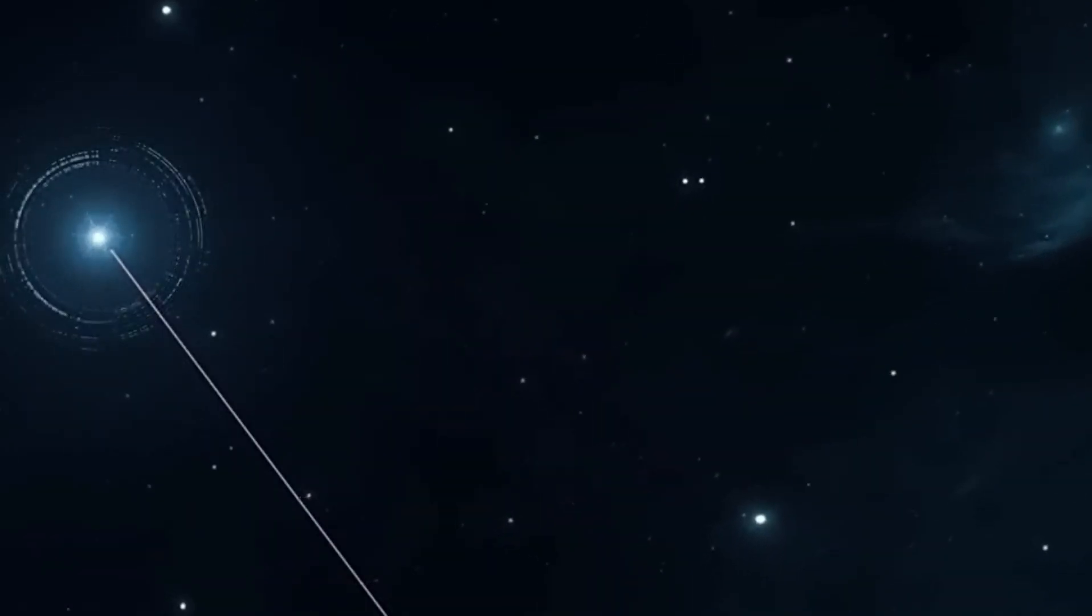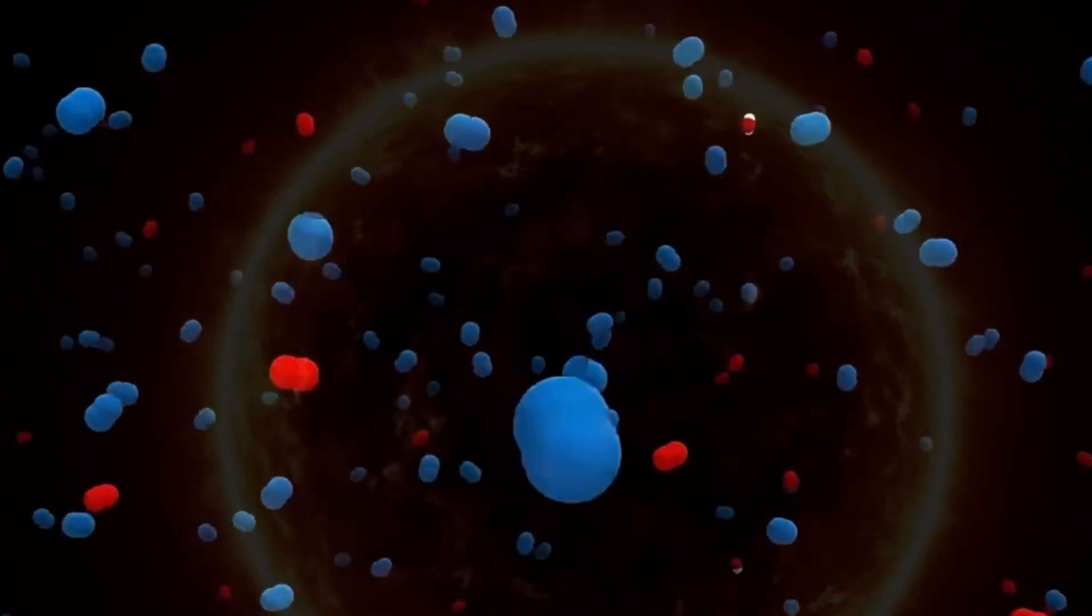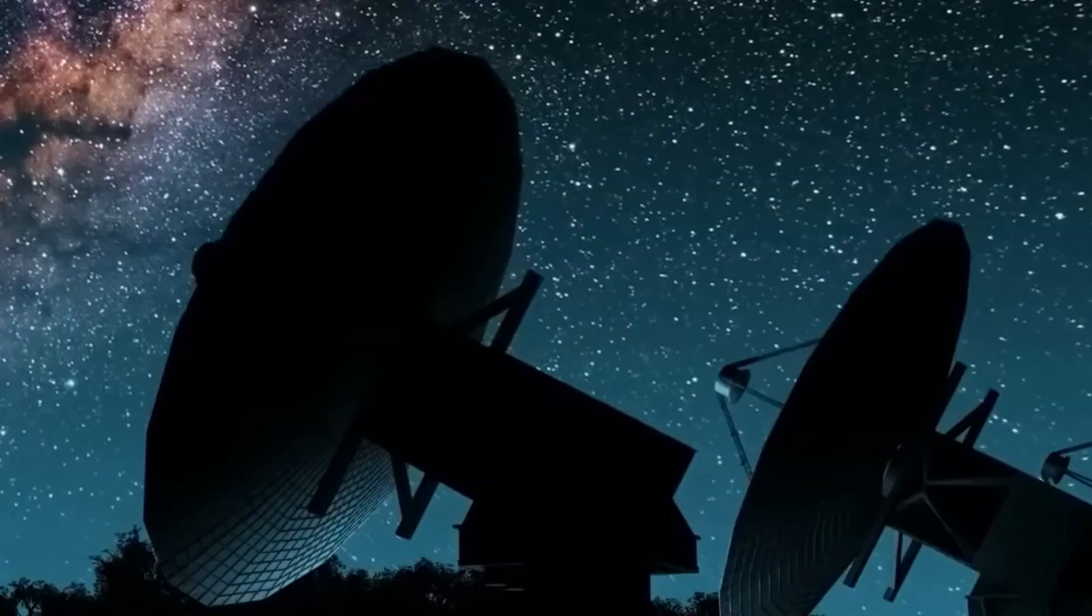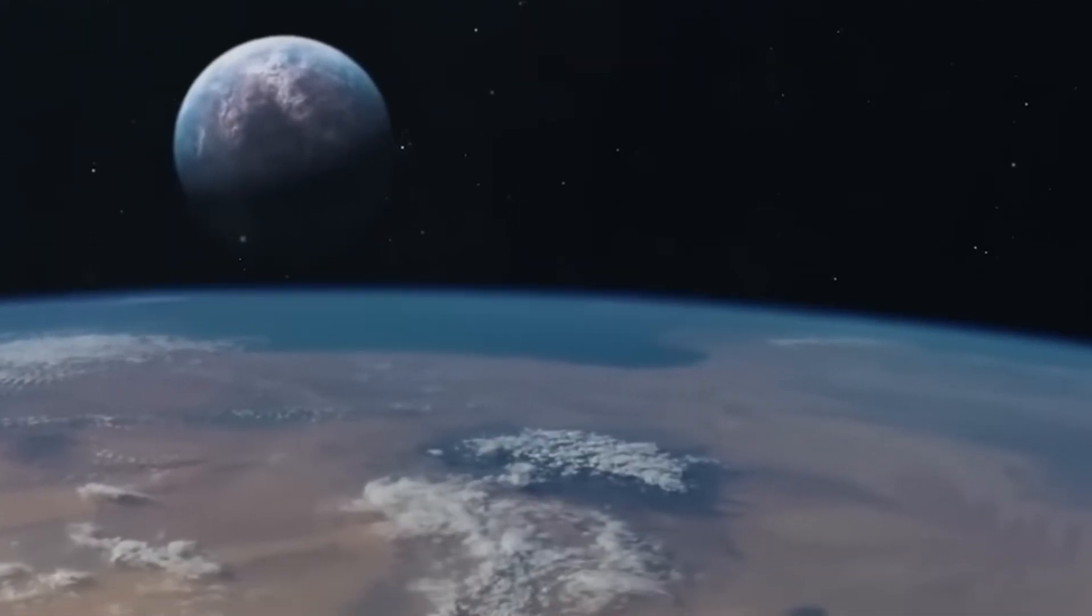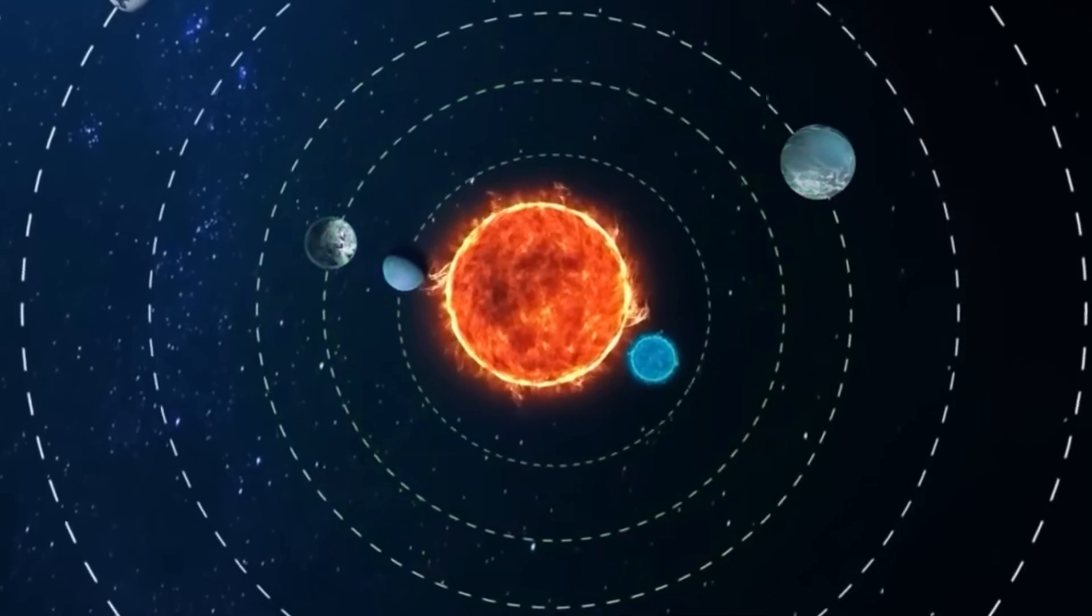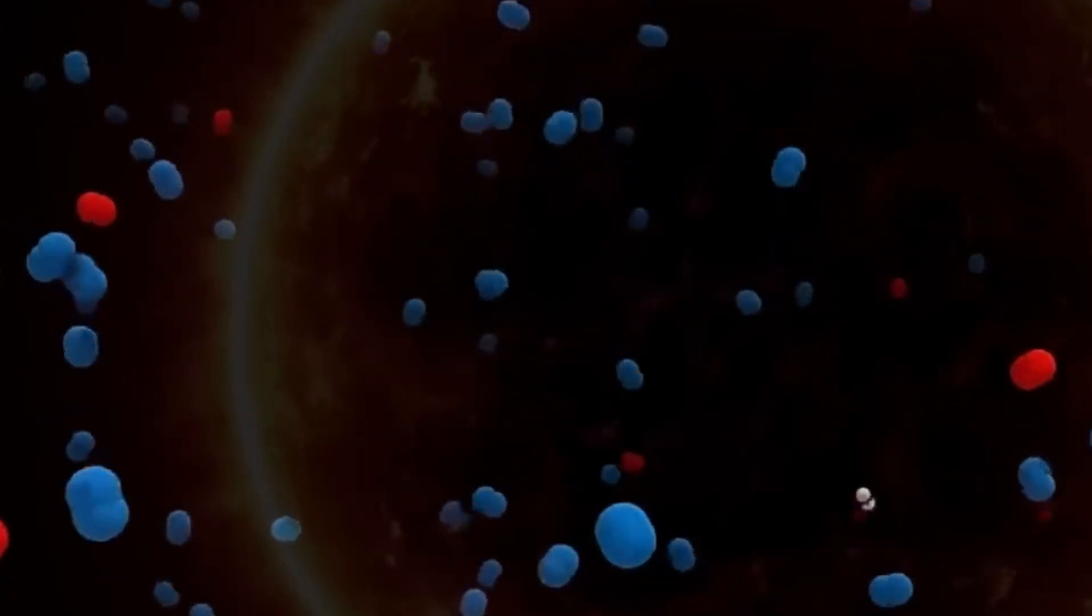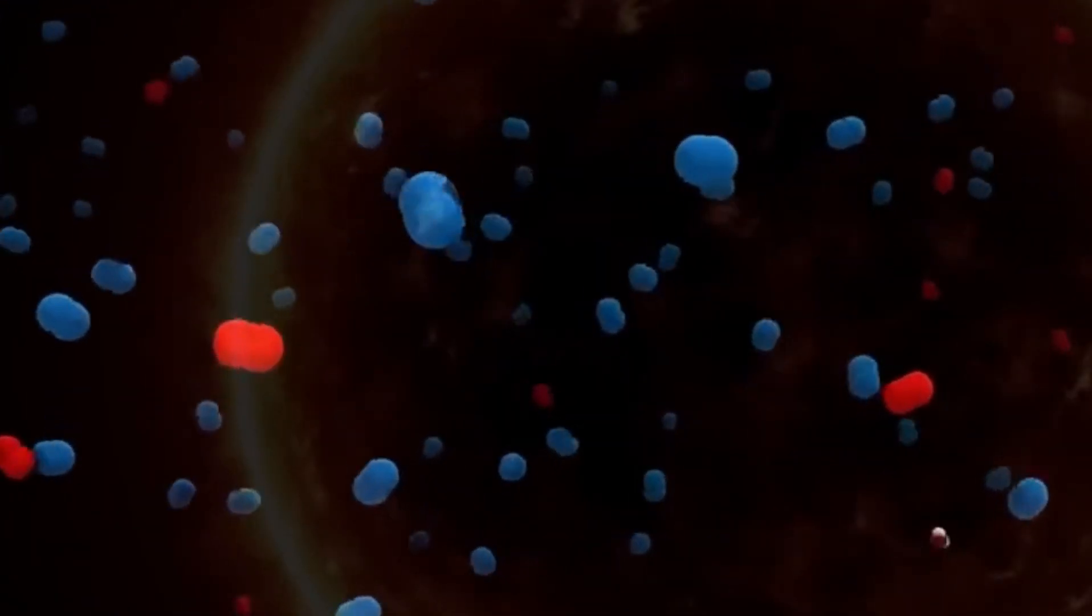HD 189733b belongs to a class of hot Jupiters. Hot Jupiters are gaseous giant planets that are extremely close to their parent star, making them the hottest and most extreme exoplanets. At a distance, the real appearance of HD 189733b could be deceiving, as it has a blue hue caused by the scattering of light in its atmosphere, similar to the mechanism that makes the sky on our Earth appear blue.